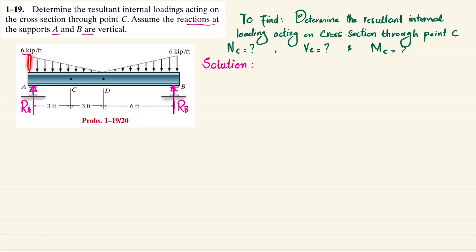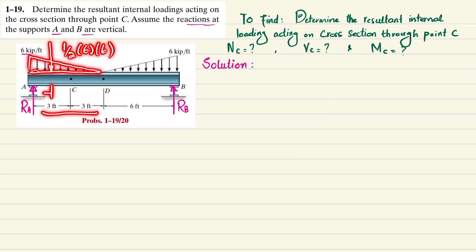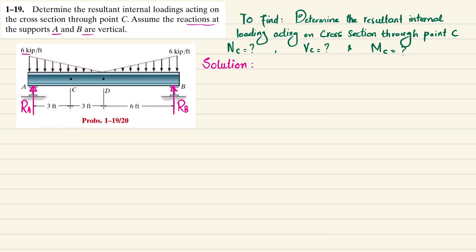The uniformly decreasing load from A to D forms a triangular area. Converting this to a point load: the load equals one-half times 6 kips/ft times the total length of 6 feet, and it acts at a distance of L/3 from the denser side. With total length 6 feet, L/3 equals 6 divided by 3, which equals 2 feet.